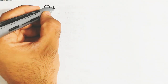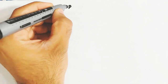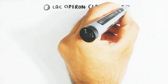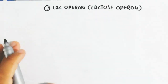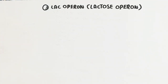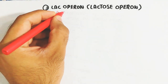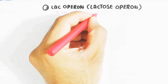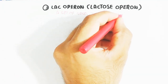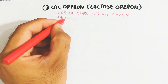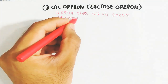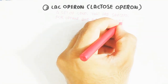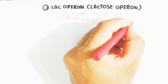In this video we will discuss the lac operon, also known as the lactose operon. The lac operon is a set of genes that are specific for the uptake and metabolism of lactose, present in bacteria. We will also learn about lactose intolerance.